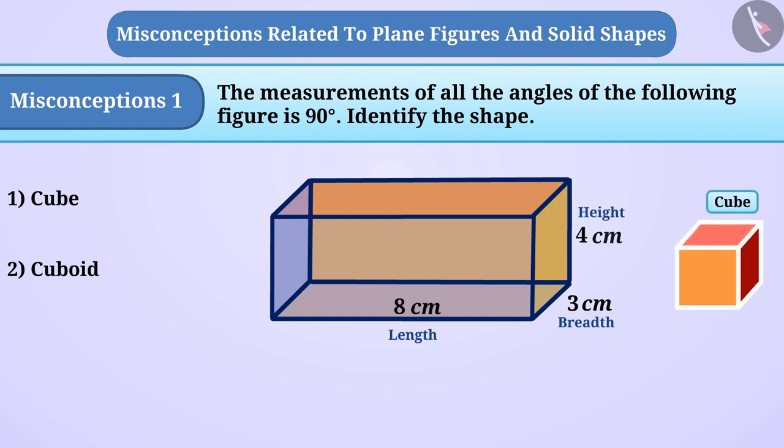Here, the children do not notice that all the faces of this shape are not square shaped. They answer option 1, which is a wrong answer.